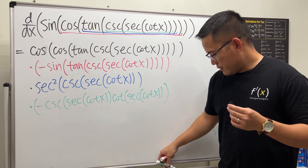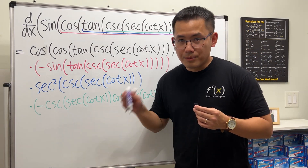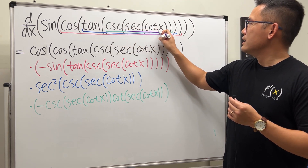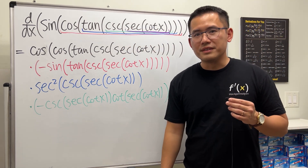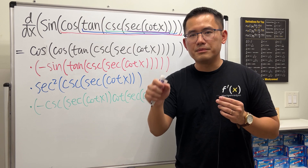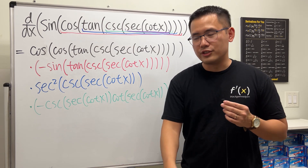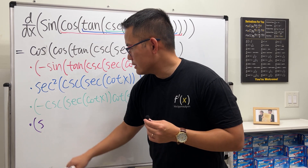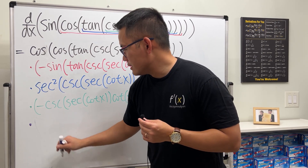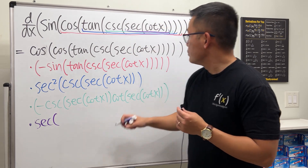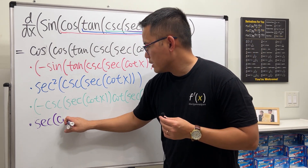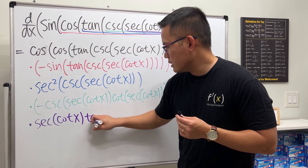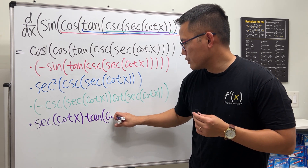Next, in purple, we differentiate secant. The derivative of secant is secant of the inside times tangent of the inside. So we multiply by secant of cotangent of x times tangent of cotangent of x.